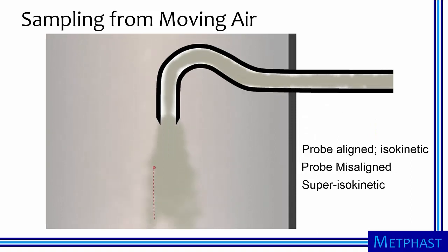In superisokinetic sampling, the velocity of air entering the probe is higher than that in the stack. Again, the inertia of large particles will cause them to be undersampled.